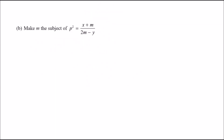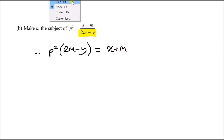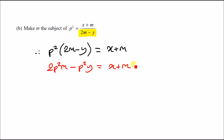Part b: make m the subject of the equation. We've got m at the top and m at the bottom. Always clear the fraction first — multiply both sides by (2m − y) to get p²(2m − y) = x + m. Expanding the bracket: 2p²m − p²y = x + m. Now line up all terms with m on one side: move +m to the left and move −p²y to the right, giving 2p²m − m = x + p²y.